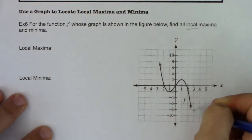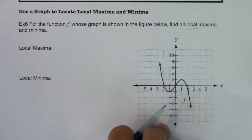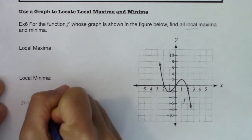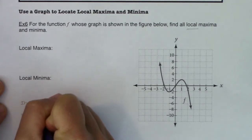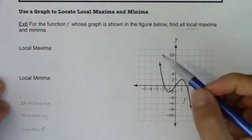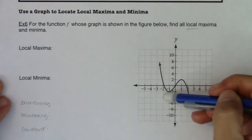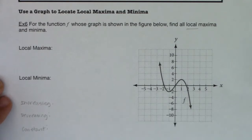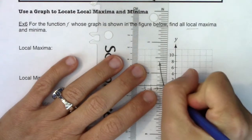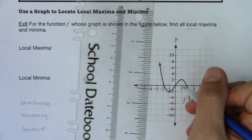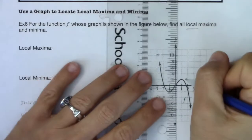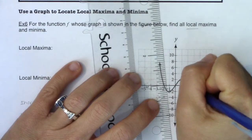As I work through this graph, I can see I'm decreasing, then increasing, then decreasing. Before finding the local max and min, let me quickly review increasing, decreasing, and constant intervals. Moving left to right I'm increasing in one region. From the graph, it looks like the low turning point is around the ordered pair negative one, negative two, so I'm increasing starting from about x equals negative one.